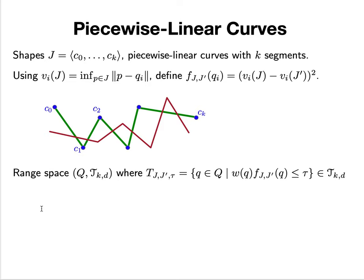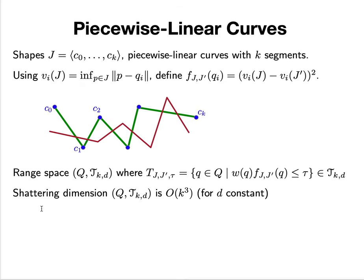To do this, I look at the range space defined by this function. For two particular shapes and some parameter, I want to say: what are all the points q for which the squared difference of their distance function is less than τ?